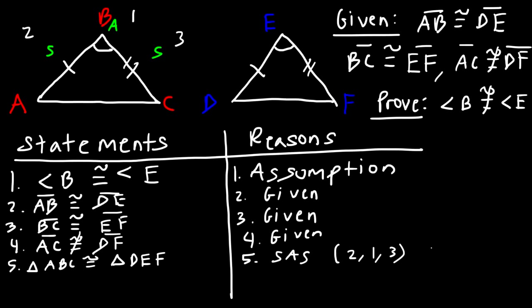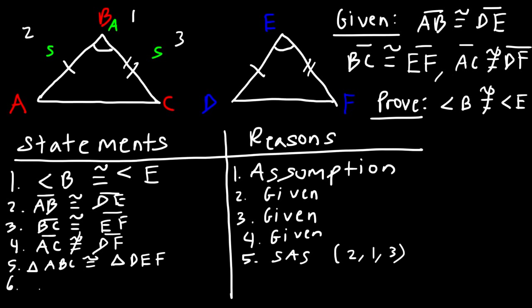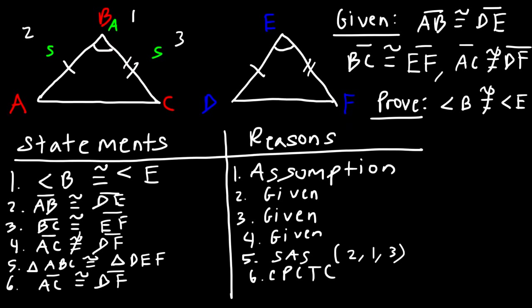Now that we've proven the two triangles are congruent, for statement six we focus on the statement that leads to a contradiction. If these two triangles are congruent, then AC should be congruent to DF, because if you have two congruent triangles, every part of those triangles should be congruent. That means AC should equal DF according to CPCTC — corresponding parts of congruent triangles are congruent.